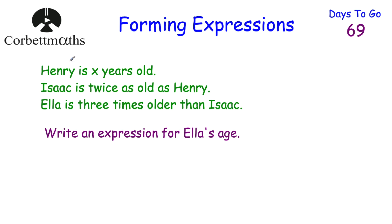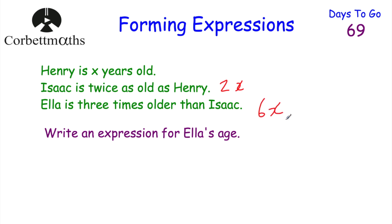Our last question: Henry is X years old, Isaac is twice as old as Henry, and Ella is three times older than Isaac. Write an expression for Ella's age. Henry is X years old, Isaac is double Henry's age so Isaac is 2X. Ella is three times older than Isaac, so we multiply 2X by 3. 2X multiplied by 3 is 6X, so Ella's age is 6X.